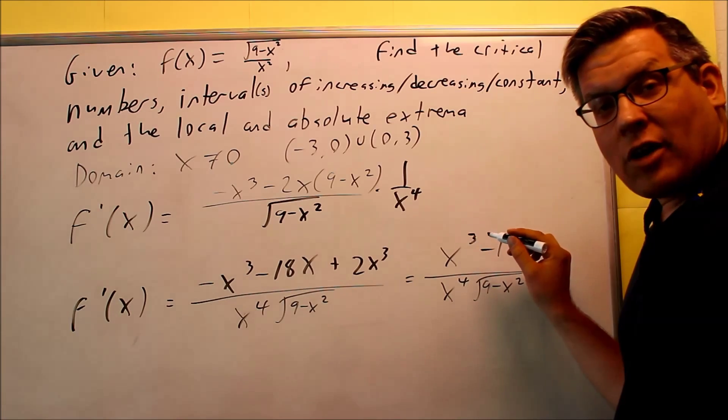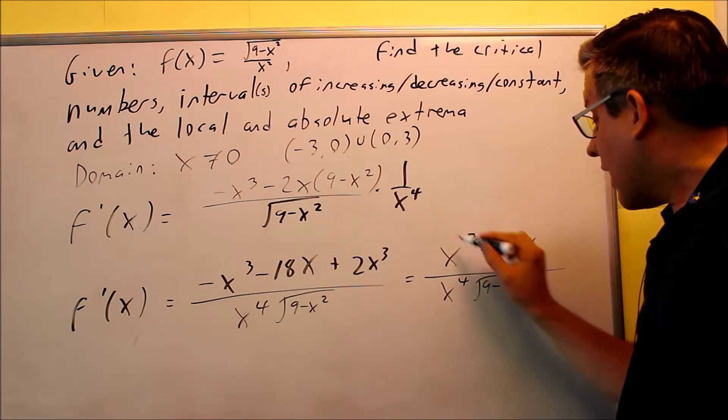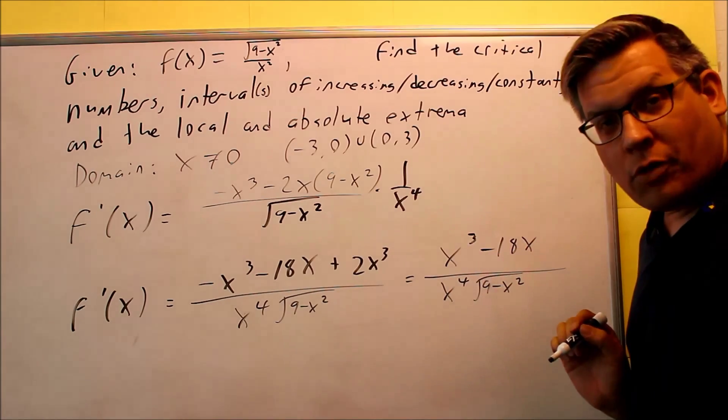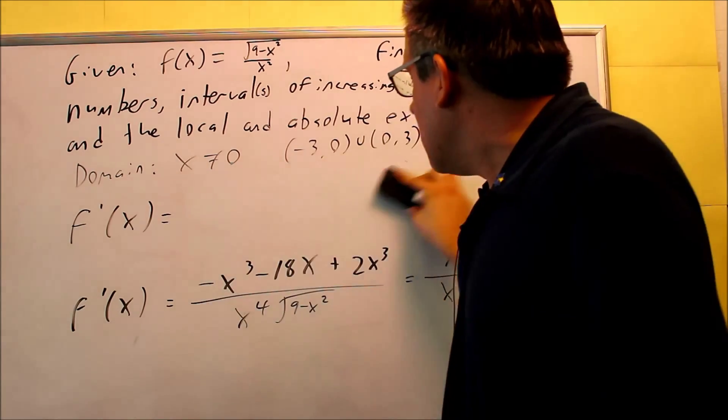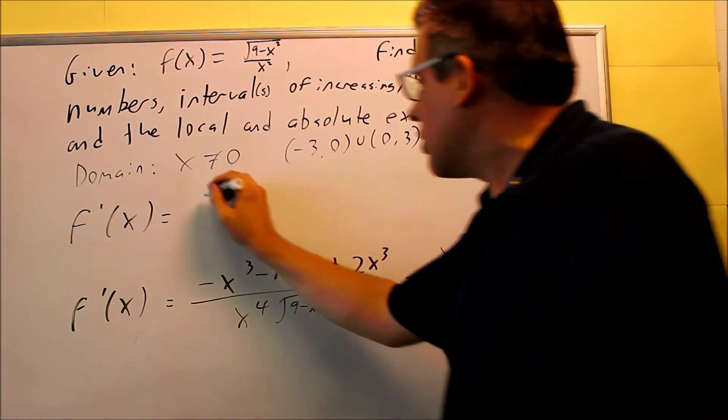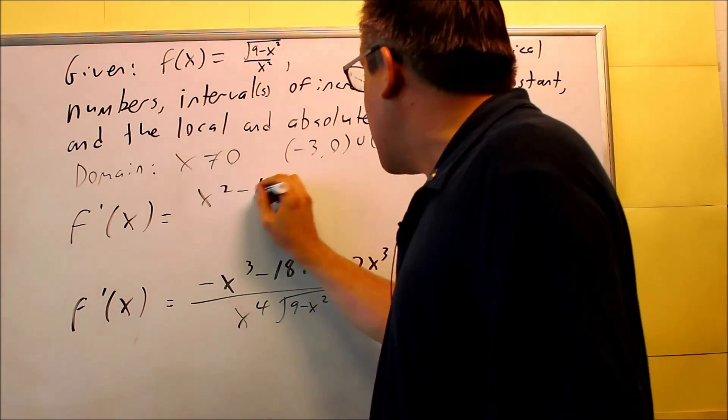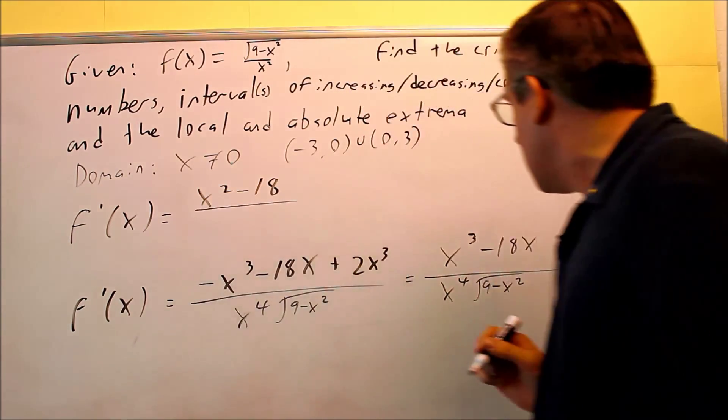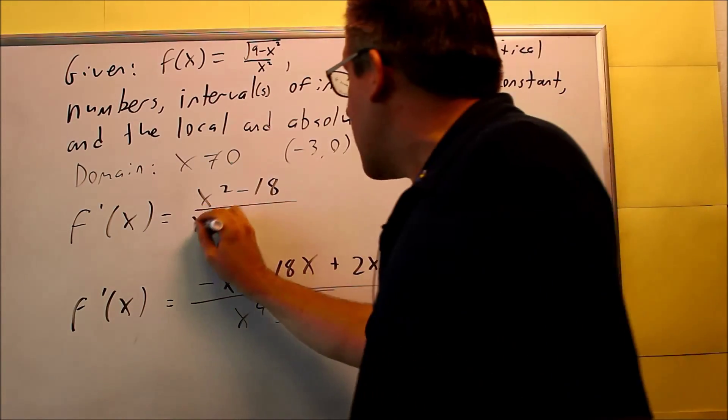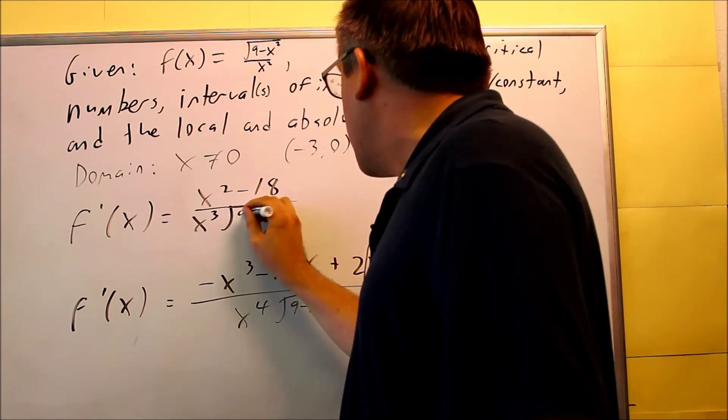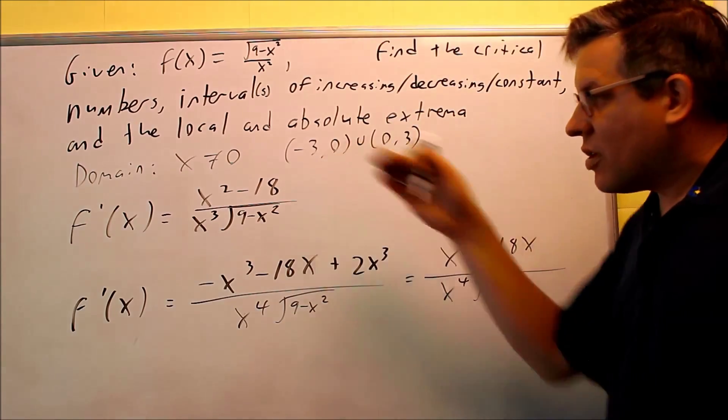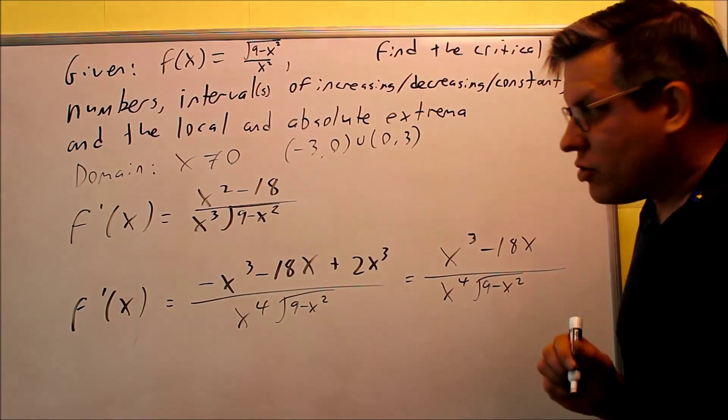Now, because I have a common factor of x here, I can divide out an x on top with one of them from the bottom. So when I do that, I can get the final reduced answer. I'm going to get x squared minus 18, and then I'll get rid of one of the x's on the bottom, x cubed, and then square root of 9 minus x squared I have on the bottom. So this now is going to be my first derivative.